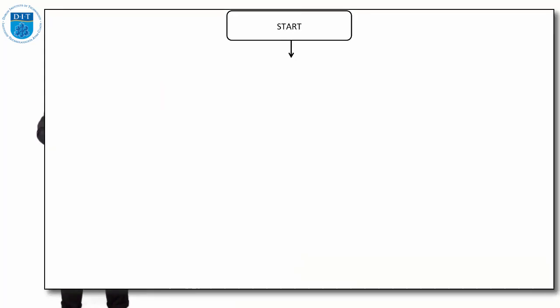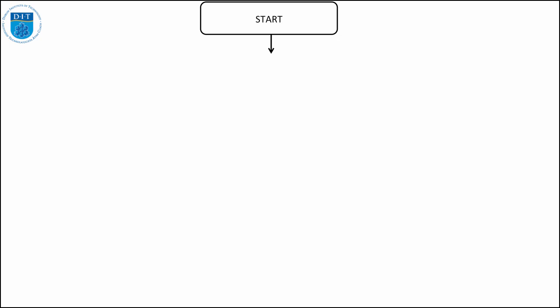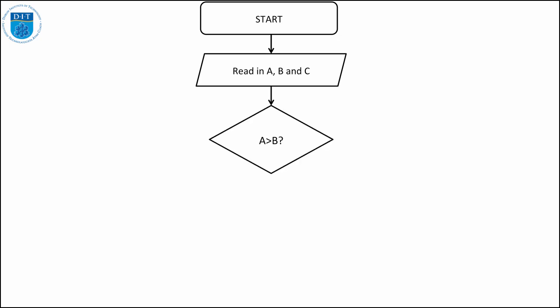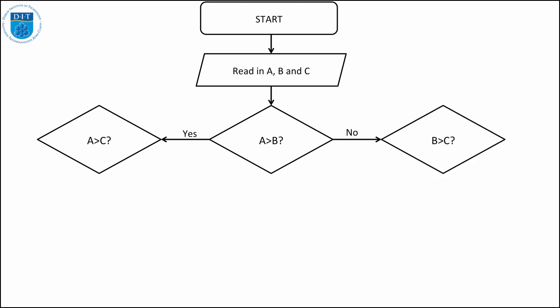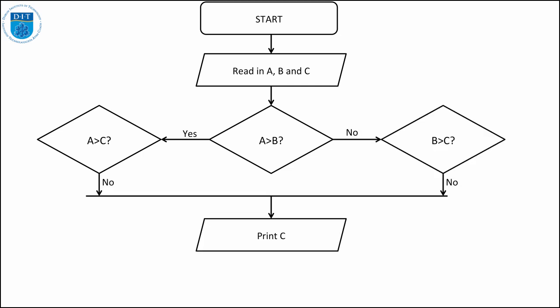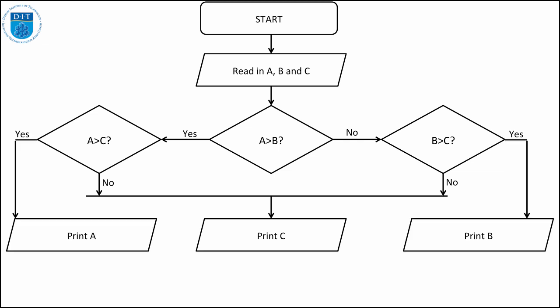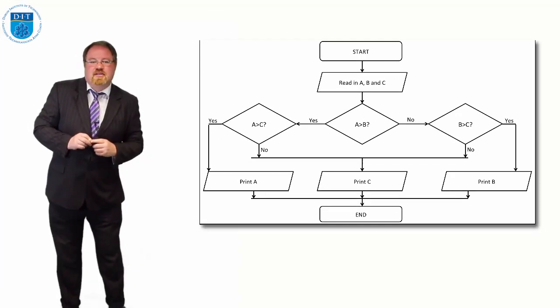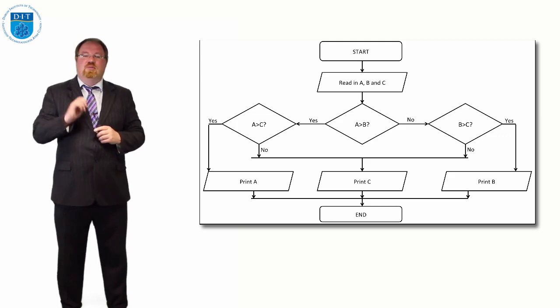The pseudocode reads: start, read in a, b, and c, check if a is bigger than b, if a is bigger than b check a bigger than c, if not check b bigger than c. In either case, if c is bigger than a and b or c is bigger than b and a, print c; otherwise print a if a is bigger than c and b, or print b if b is bigger than a and c. Then bring it all together with end. And that's it for this session — we'll see you in the next episode.